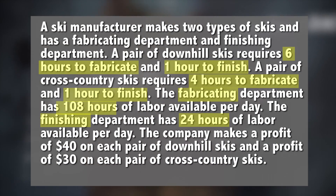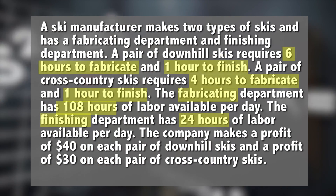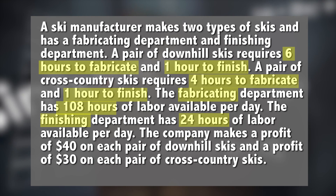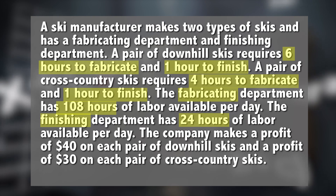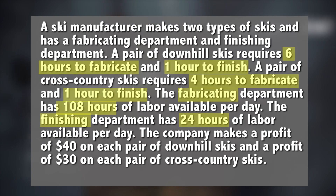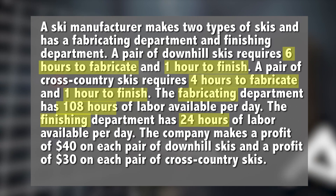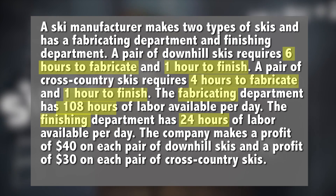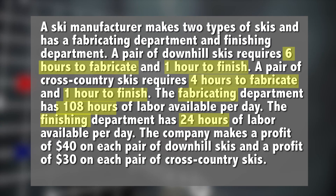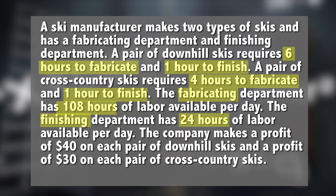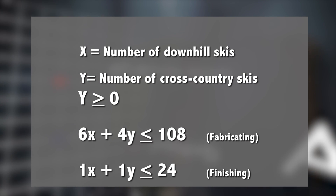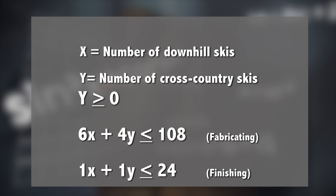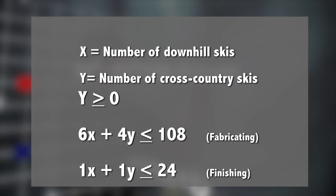A ski manufacturer makes two types of skis and has a fabricating department and a finishing department. A pair of downhill skis requires six hours to fabricate and one hour to finish. A pair of cross-country skis requires four hours to fabricate and one hour to finish. The fabricating department has 108 hours of labor available per day and the finishing department has 24 hours of labor each day. The company makes a profit of $40 on each pair of downhill skis and $30 on each pair of cross-country skis. Here are your equations — this one's all about fabricating and this one's all about finishing. Now it's your turn to help them maximize their profit.